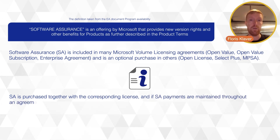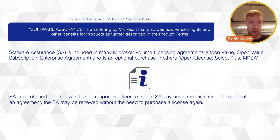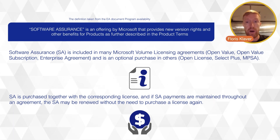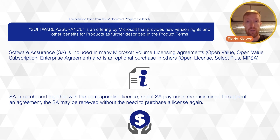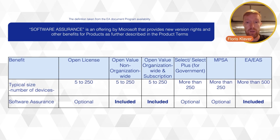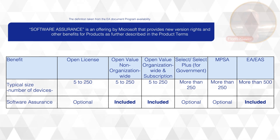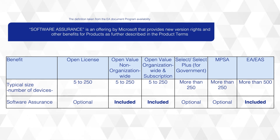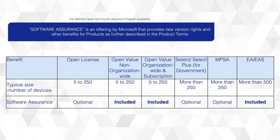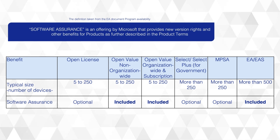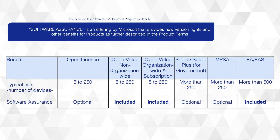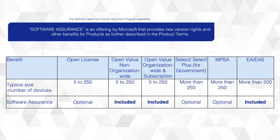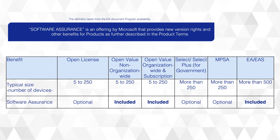There are also a lot of general benefits that Software Assurance offers, which we'll go into more deeply in the coming slides. You can buy Software Assurance for your licenses in certain Microsoft contracts. On this slide, if you look at the horizontal axis, you see the different contract types: Open License (which has been discontinued but you may still have an active one), Open Value non-organization-wide, Open Value organization-wide, Select, Select Plus, and MPSA.